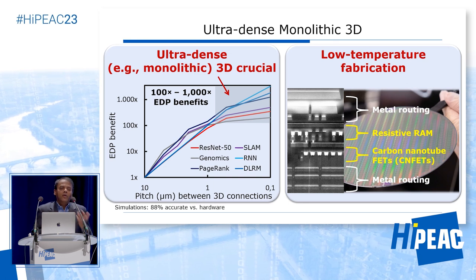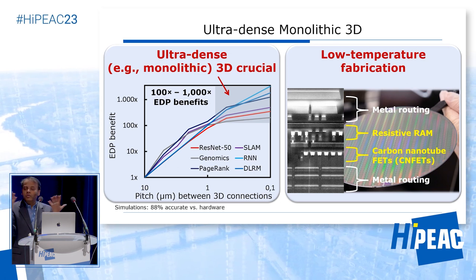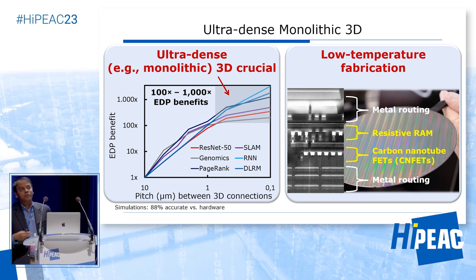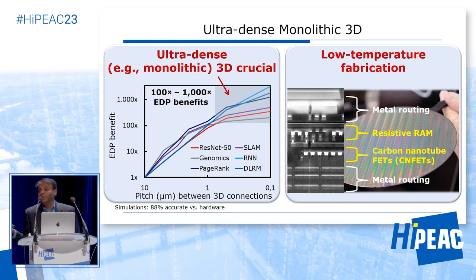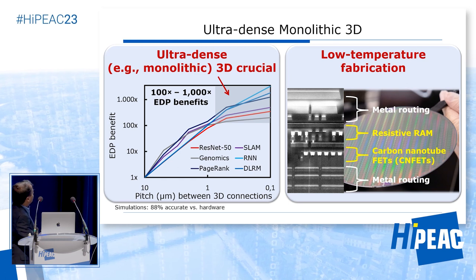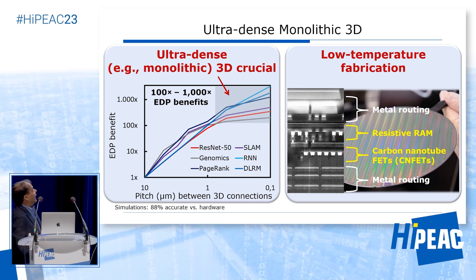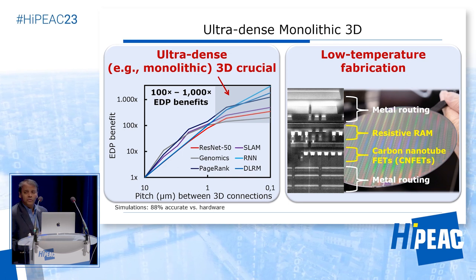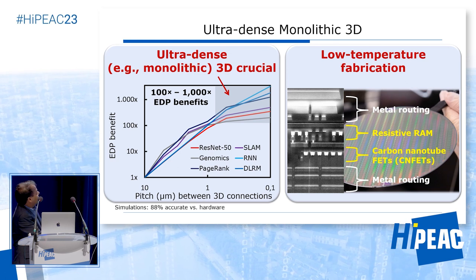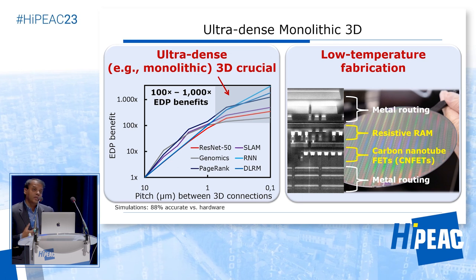The question is, how dense is ultra-dense? What I'm showing on this plot is the pitch between various vertical connections. I picked 10 microns here — because if you look at 3D using through-silicon vias or TSVs today, those are at a level of 50 microns — and I'm sweeping the x-axis down to roughly around 100 nanometers. On the y-axis is the energy delay product benefit if I implemented a whole bunch of applications — from AI workloads to AR/VR, to genomics, to graph analytics. The key point is that you need very dense vertical connectivity — a very dense pitch of around 100 nanometers or less — to be able to achieve this 100x to 1,000x energy delay product.